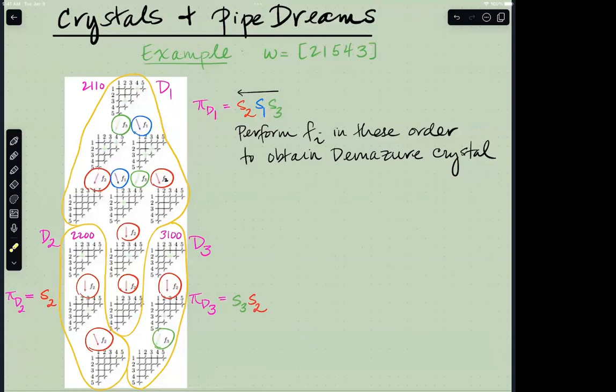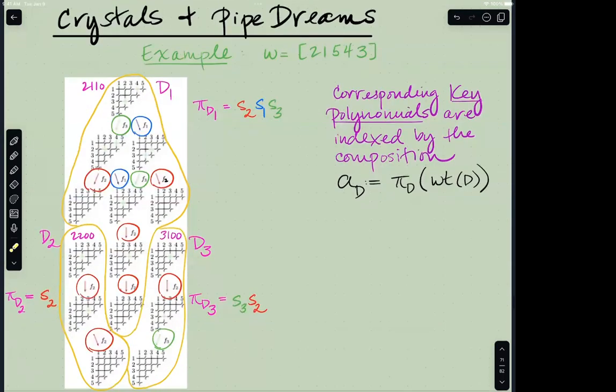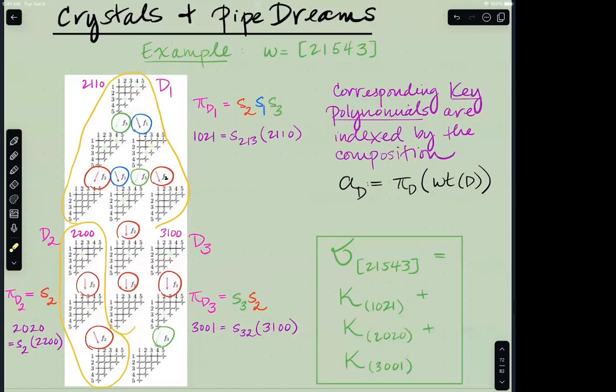For example, the truncating permutation, once you see the graph like this, you can read off the truncating permutation. You read sort of backwards to see what operators am I allowed to apply first, what operators second, and so forth. The key polynomial can then be obtained by reading off that permutation and applying it to the highest weight vector, the weight of that highest weight reduced pipe dream, and recording the composition. Here's the sum of this particular Schubert polynomial as the sum of three key polynomials. Those three key polynomials are characters of three different Demazure crystals.